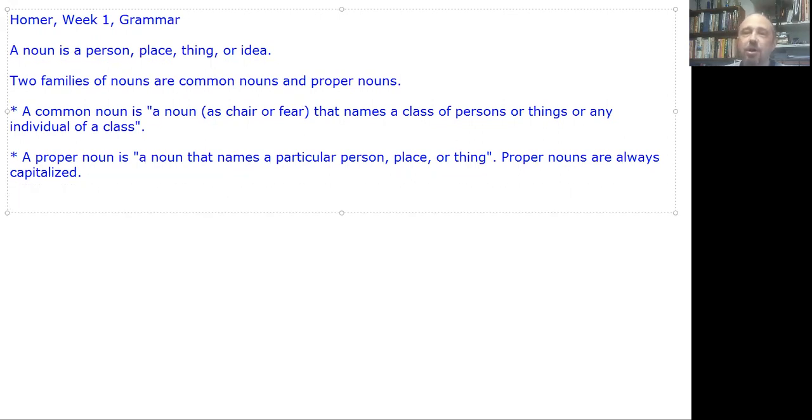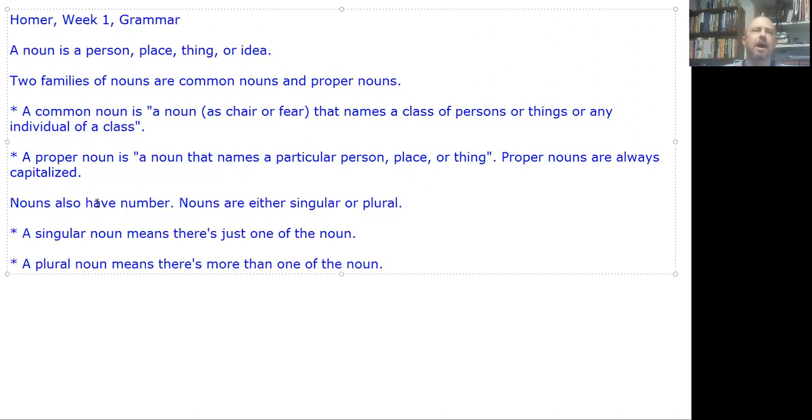Nouns also have number. This is a fairly easy concept, I believe. Nouns are either singular or plural. A singular noun means there's just one, and plural means there's more than one, or two or more, depending on how you look at it.